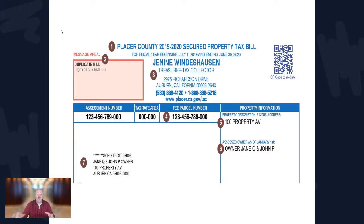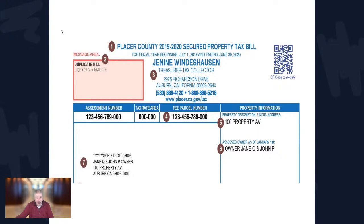The lender only gets a copy of your taxes if the top left corner of your bill — section number two — says 'duplicate bill, original was sent to your lender.' Watch for that. If it says that, you don't need to call your lender to ask if they got your property tax bill. If it doesn't say that, you need to call your lender or servicer to confirm they received the tax bill.